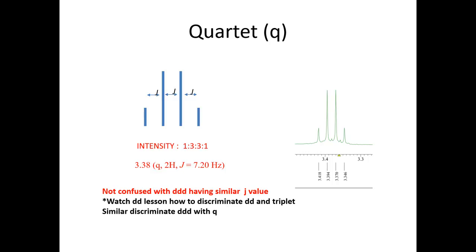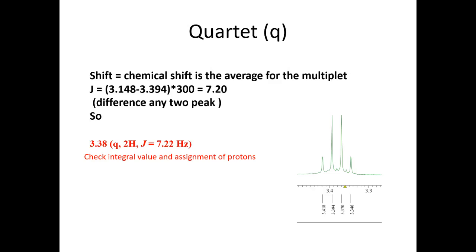The chemical shift, how you can report the chemical shift of the quartet - just simple average for the multiplet and calculate the J value. Any difference between any two lines gives you the J value multiplied by the spectrometer frequency equals 7.2. Here we use this example to calculate the J value.